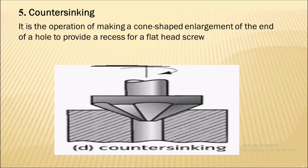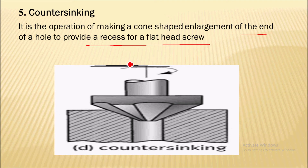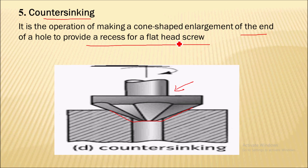The next operation is the counter sinking operation. It is the operation of making a cone-shaped enlargement at the end of a hole to provide a recess for a flat head screw. We make a cone-shaped arrangement at the end of the hole by the counter sinking operation. For that, a counter sink tool is used. This is created to accommodate the head screw, which is conical in shape at the top, so the head screw is accommodated into this hole.